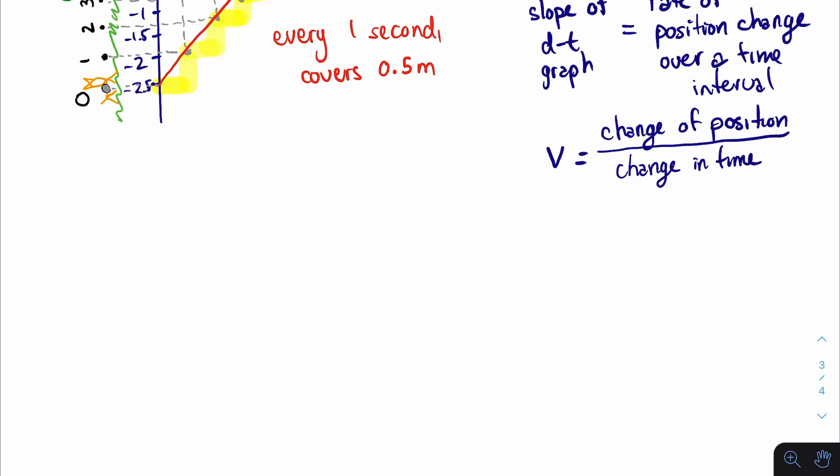But in math, change can be represented by the letter delta. And position is represented by the letter d. So this new quantity, displacement over the change in time, which we gave the letter v, is the velocity of the object. So now we derive the new quantity, which is the velocity, which tells us how quickly an object changes its position with time.